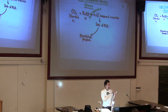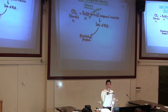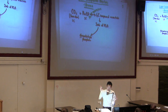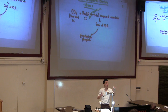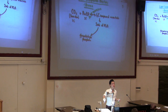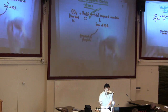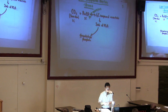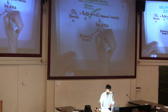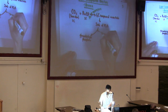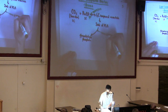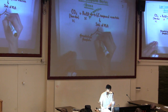Now we have two molecules of PGA, and that PGA is converted to glycerate phosphate. What is needed for that conversion? ATP and NADPH are needed for that step.